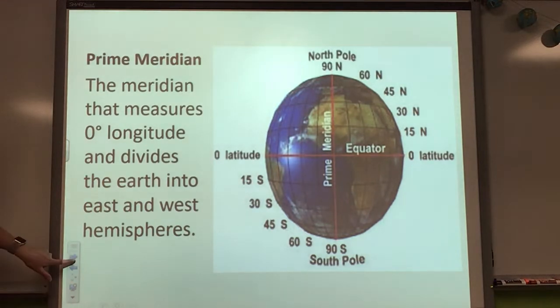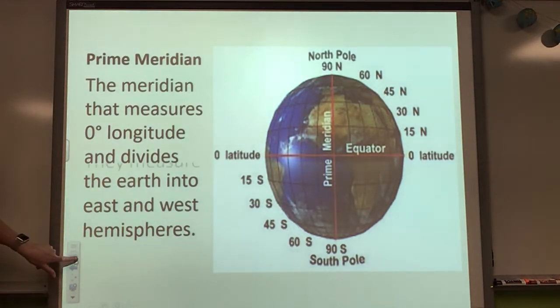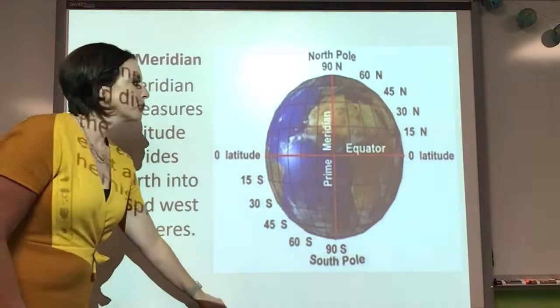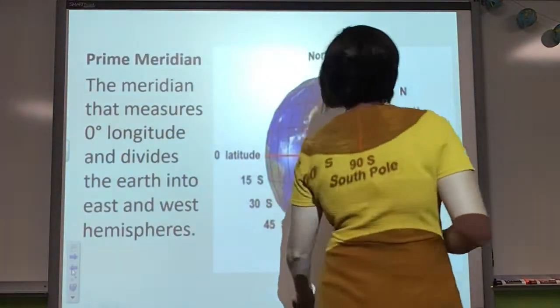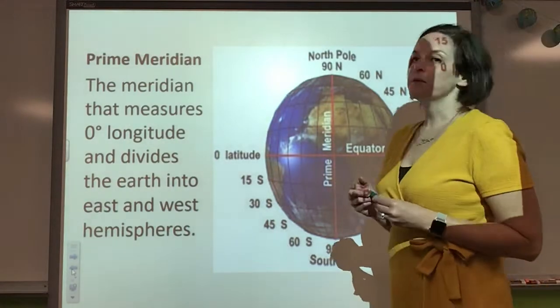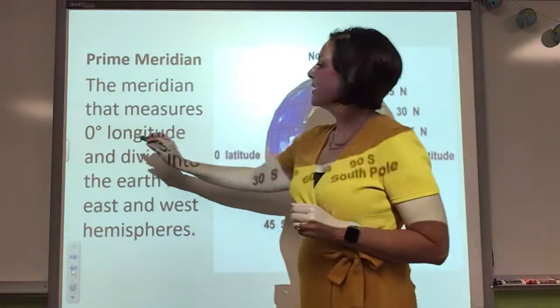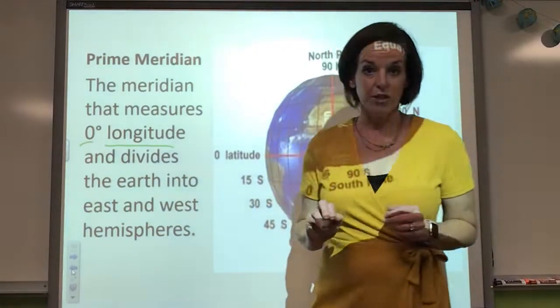Next, we have the prime meridian. I'm going to scoot ahead just a little bit. So the prime meridian, I'll use green here since it's red. So the prime meridian now is zero degrees but longitude.